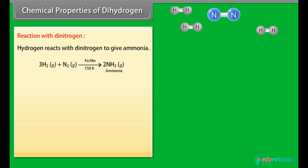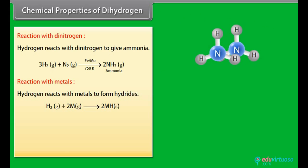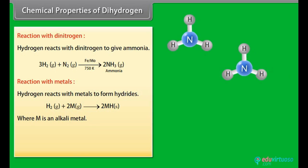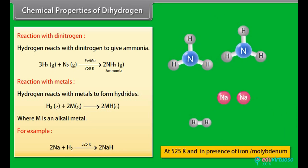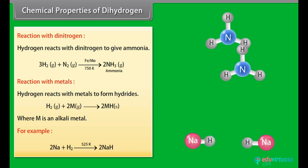Chemical properties of dihydrogen. Reaction with dinitrogen: Hydrogen reacts with dinitrogen to give ammonia. Reaction with metals: Hydrogen reacts with metals to form hydrides, where M is an alkali metal. For example, 2 Na plus H2 on temperature 525 Kelvin gives 2 NaH.